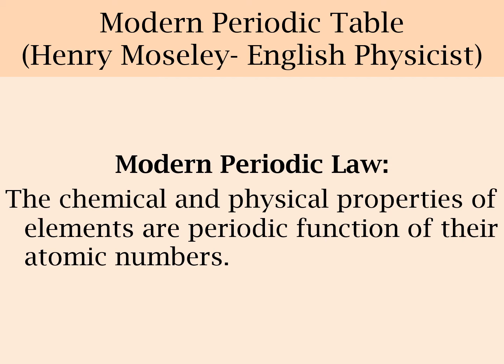So how was the modern periodic law different from Mendeleev's periodic law? It changed from atomic mass to atomic number. Now what we are going to study is the modern periodic table — how elements have been arranged, the characteristics of elements in various periods and groups, how many groups there are, how many periods there are, and so on.